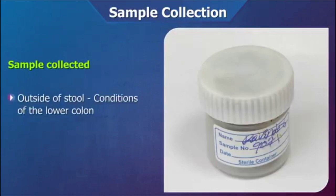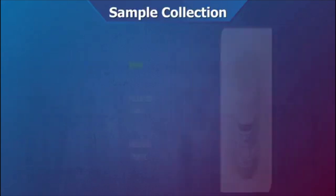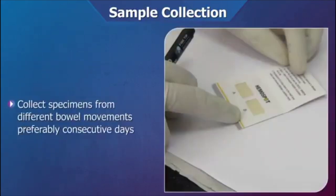Samples from the outside of the stool are most likely to reflect the condition of the lower colon, while specimens taken from inside of the stool are more likely to reflect conditions of the upper gastrointestinal tract. The two test fields provided in Hemospot facilitate detection and localizing the source of bleeding. Because bleeding may be intermittent, it is preferable to collect specimens from different bowel movements.